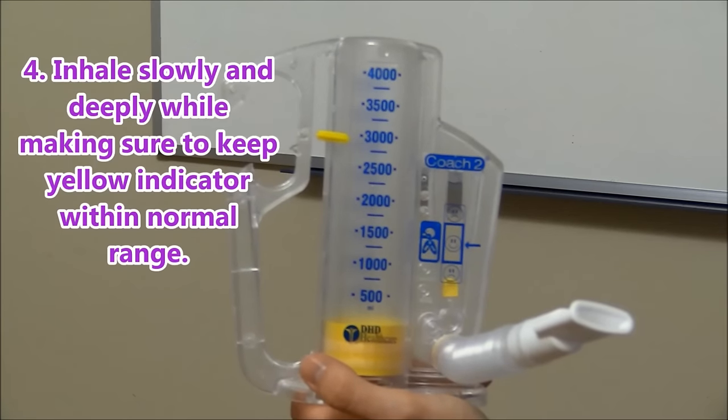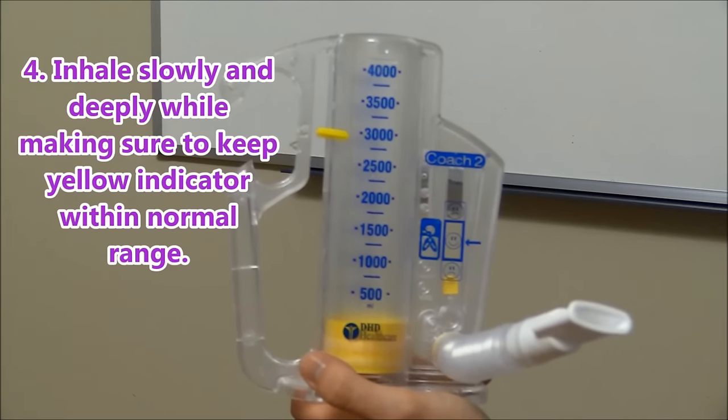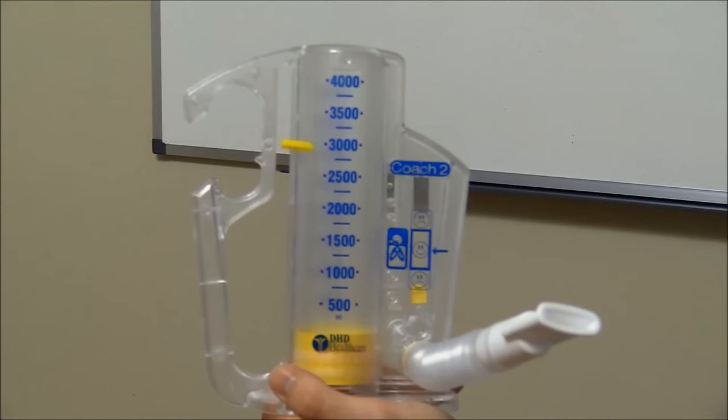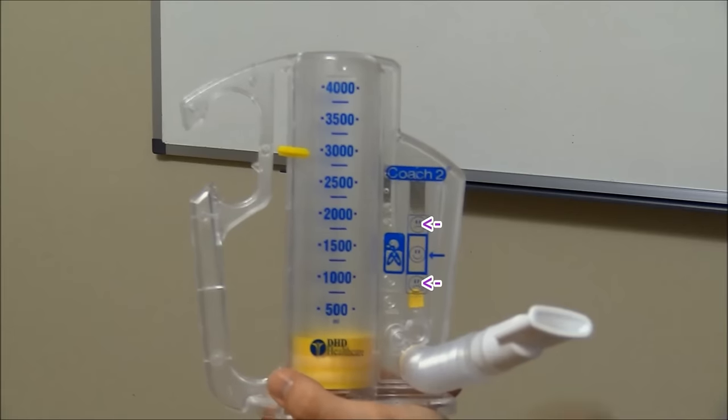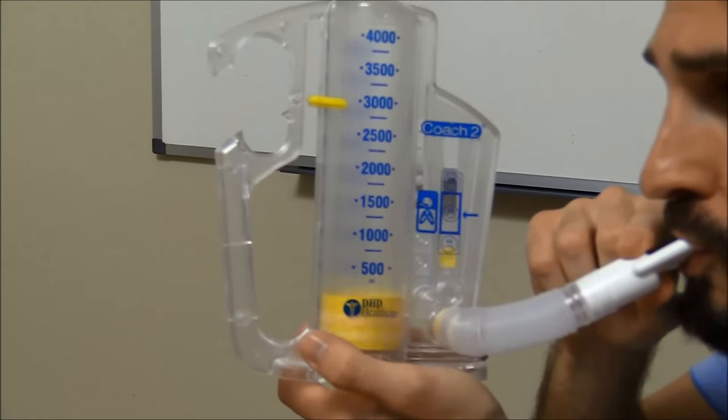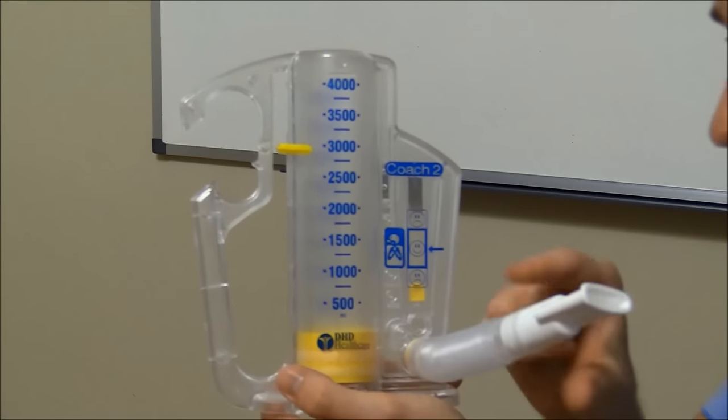Make sure to keep the yellow indicator on the side within normal range. They don't want that little yellow piece to go too high or too low. And as they do this, the piston will rise up.